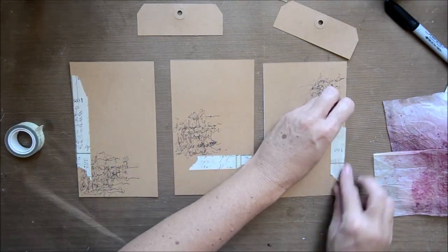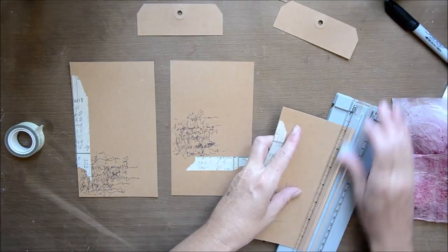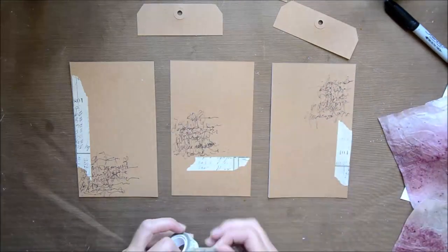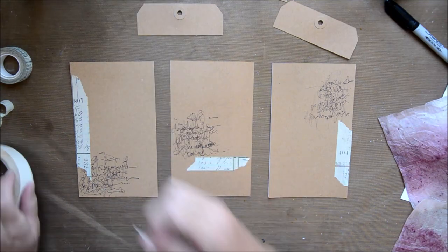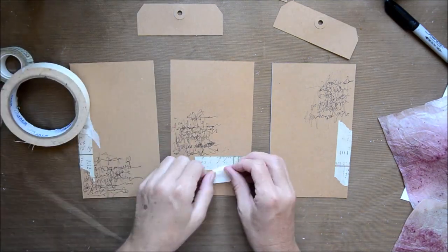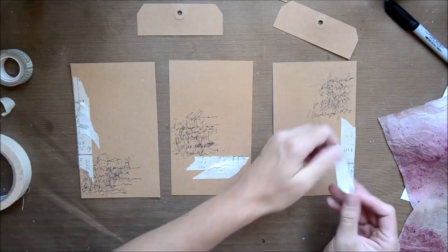So after my journaling, I'm just adding some washi tape, it's a Tim Holtz one, and also some masking tape just to build a bit of texture. I end up doing quite a few layers on this one.